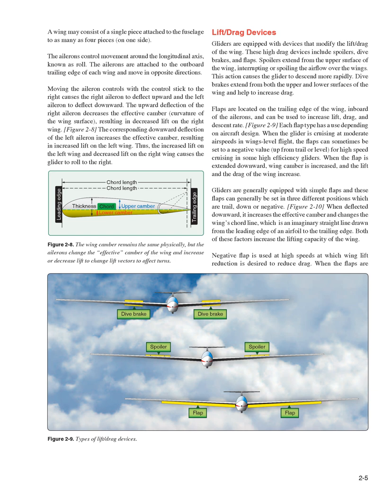Moving the aileron controls with the control stick to the right causes the right aileron to deflect upward and the left aileron to deflect downward. The upward deflection of the right aileron decreases the effective camber — the curvature of the wing surface — resulting in decreased lift on the right wing. The corresponding downward deflection of the left aileron increases the effective camber, resulting in increased lift on the left wing. Thus, the increased lift on the left wing and decreased lift on the right wing causes the glider to roll to the right.